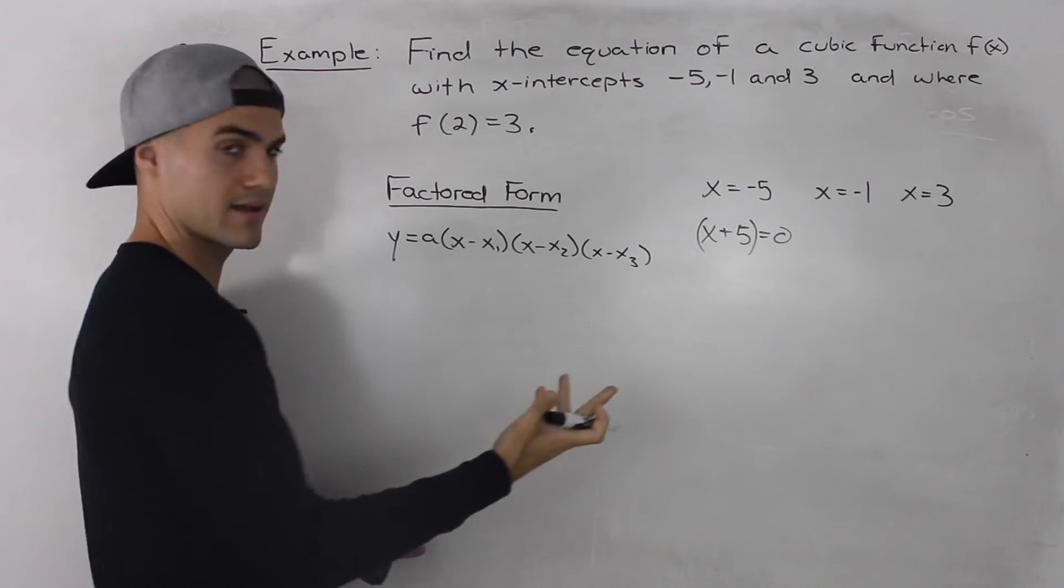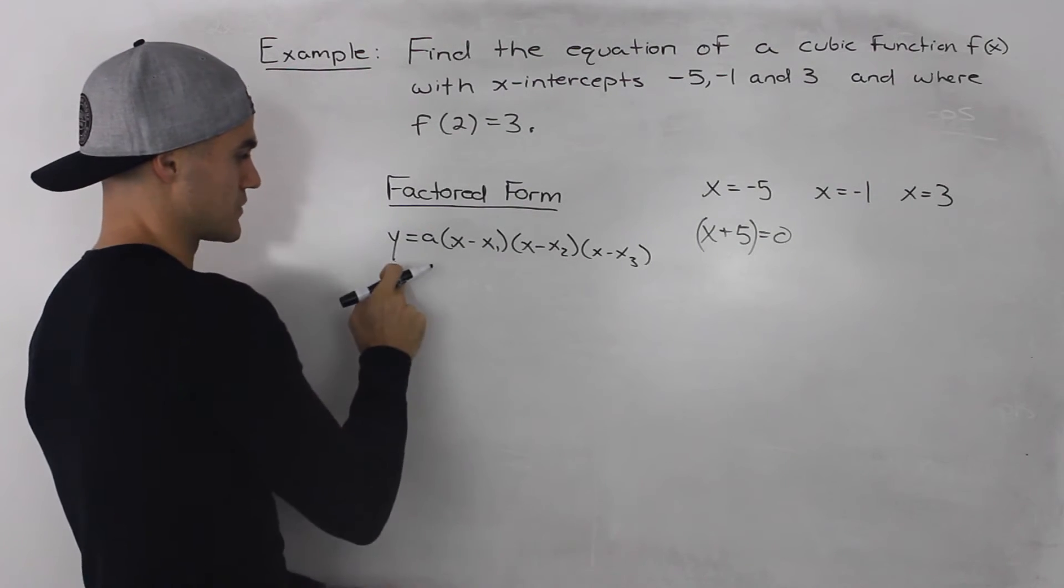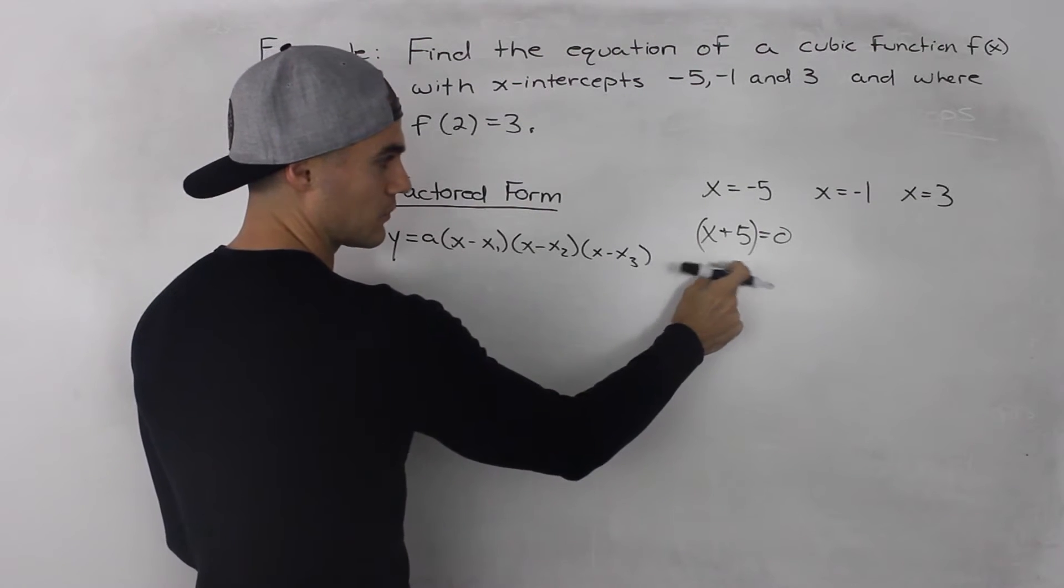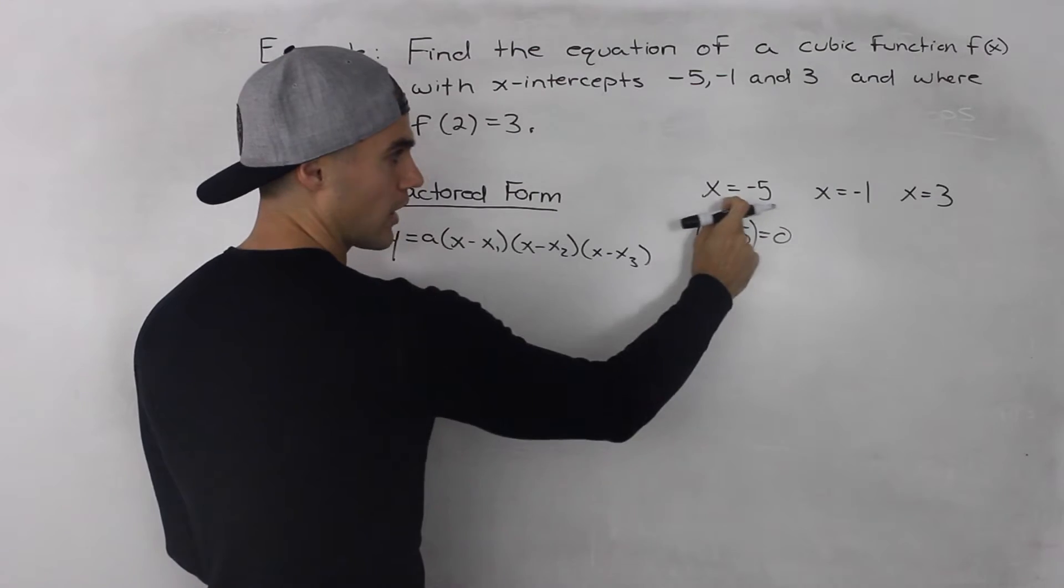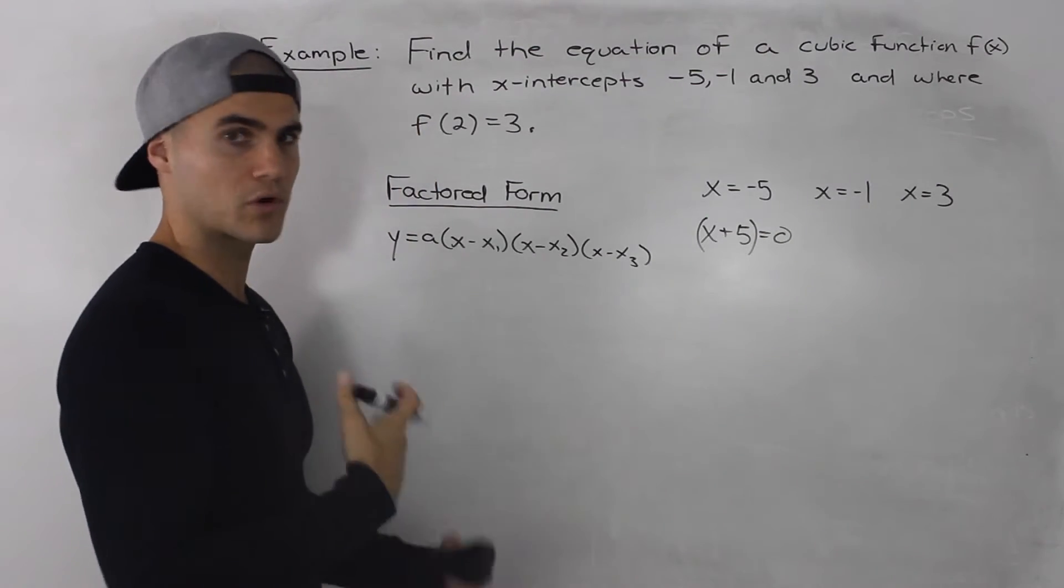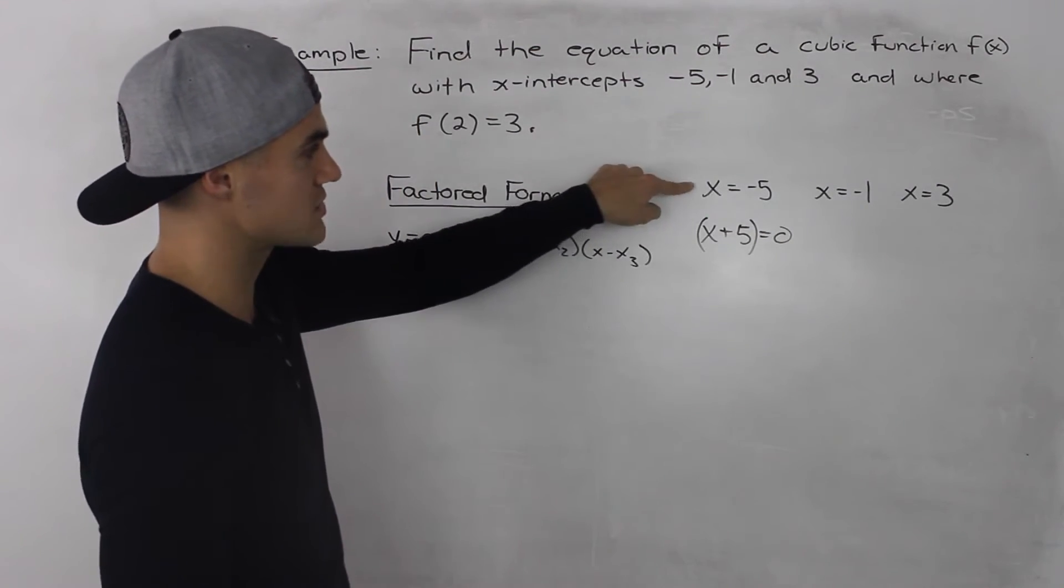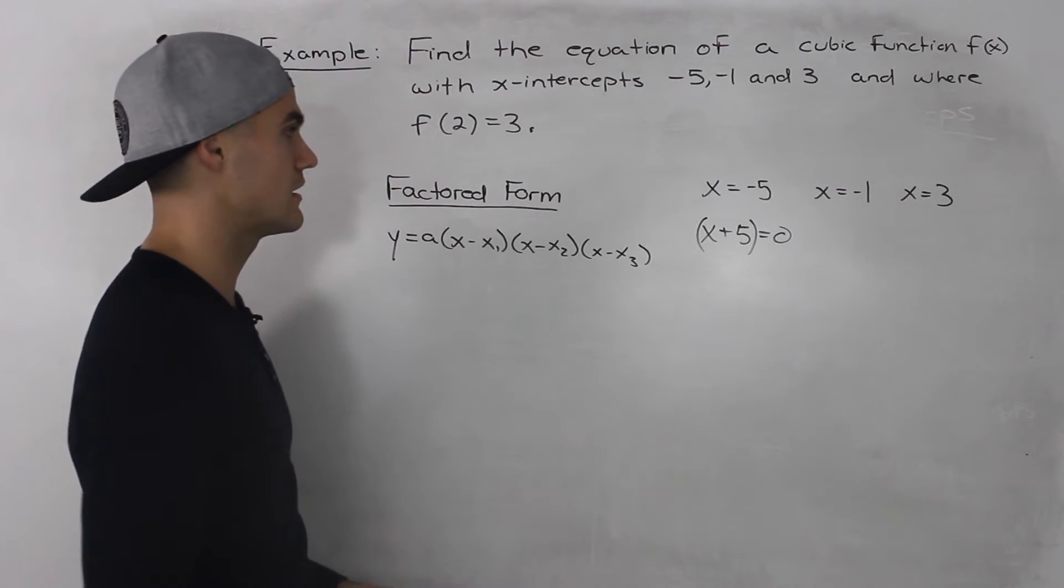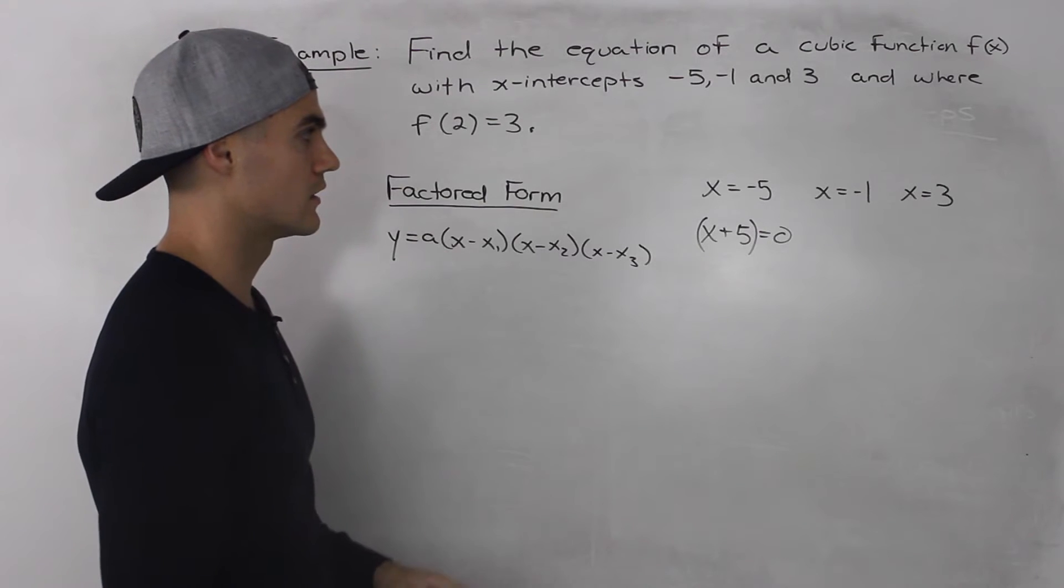Usually what happens is we're given the brackets and we have to find the x-intercepts, so we make 0 equal to y, and then we're given this bracket and we have to solve for when it's equal to 0, and we get the x-intercept of -5. This time we're working backwards. We're given the x-intercept of -5, and then we have to figure out what that bracket would be in the factored form polynomial.